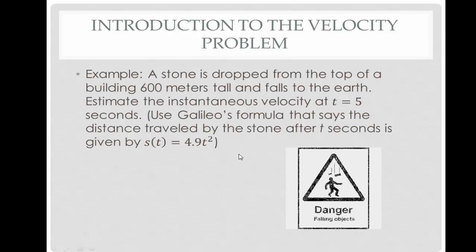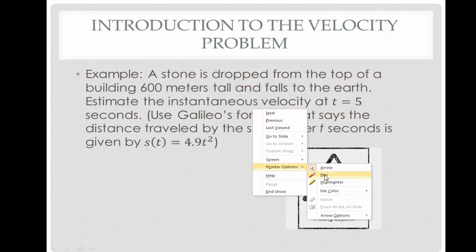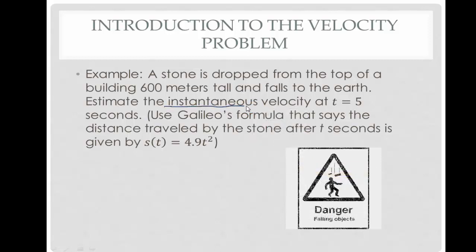A stone is dropped from the top of a 600-meter-tall building and falls to earth. Estimate the instantaneous velocity at t equals 5 seconds. We'll use Galileo's formula: the distance traveled after t seconds is s(t) = 4.9t². This formula is only valid when simply dropping an object from a height — if it's launched into the air, the formula changes. We are looking to estimate the instantaneous velocity specifically at 5 seconds, not between two times but at one specific time.